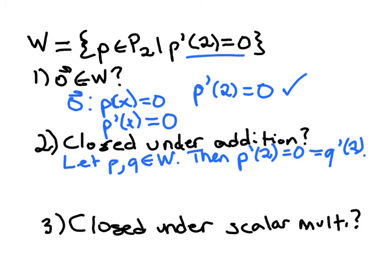So now the question, if it's closed under addition, we need to determine whether the sum of those two generic polynomials from W, does the sum also belong to W then? So to check that, we would take the derivative at 2. But one of our properties of derivatives says I can take the derivative of P plus Q as P prime at 2 plus Q prime at 2.